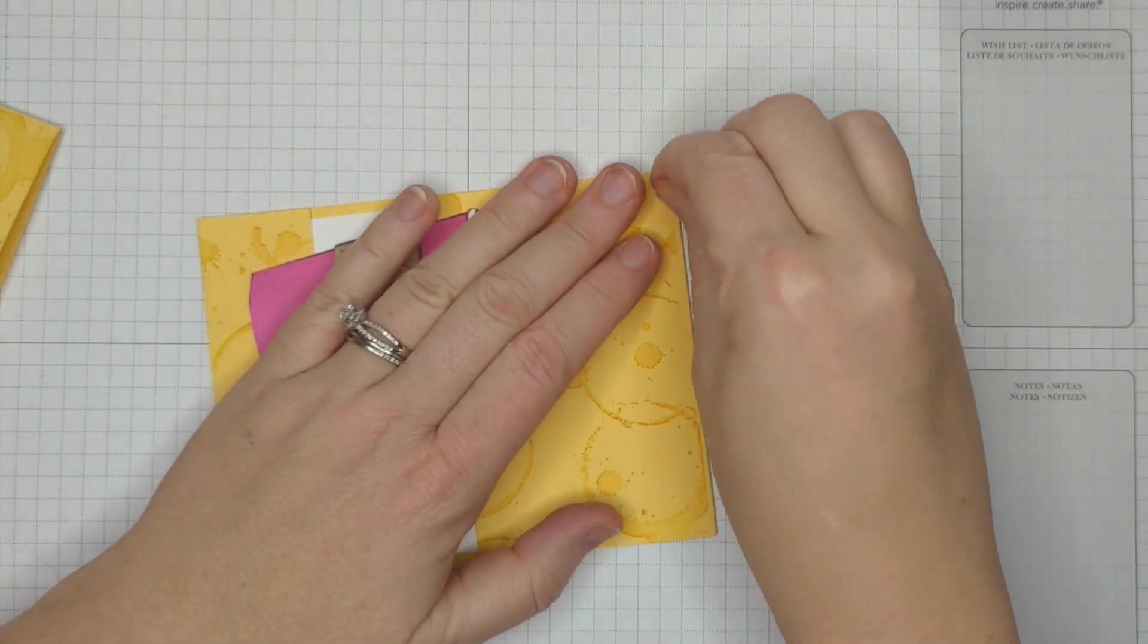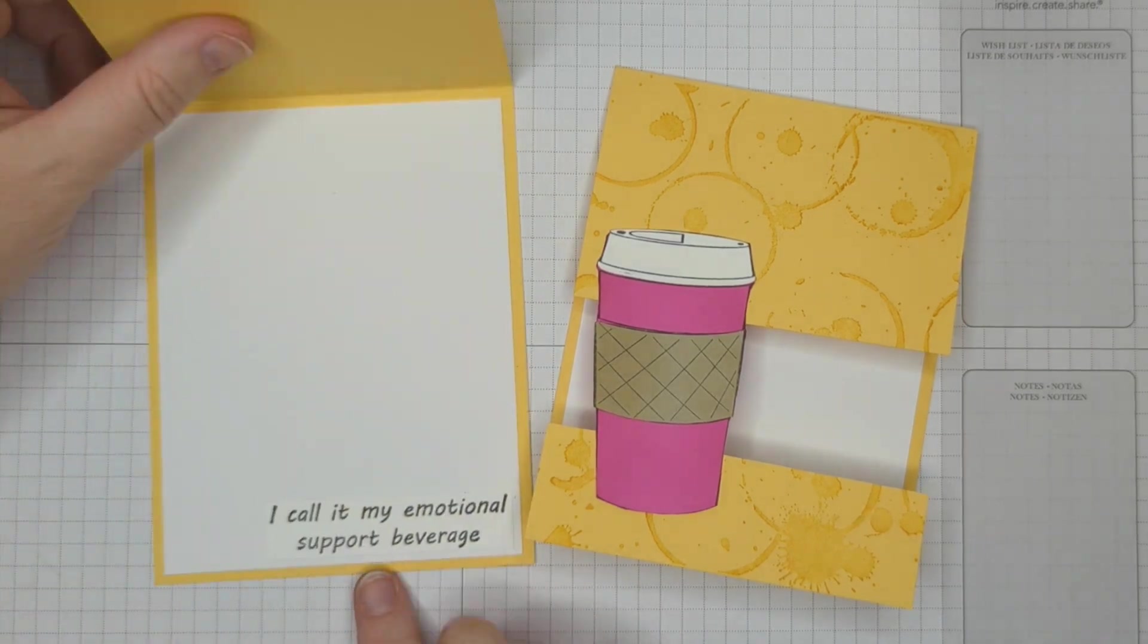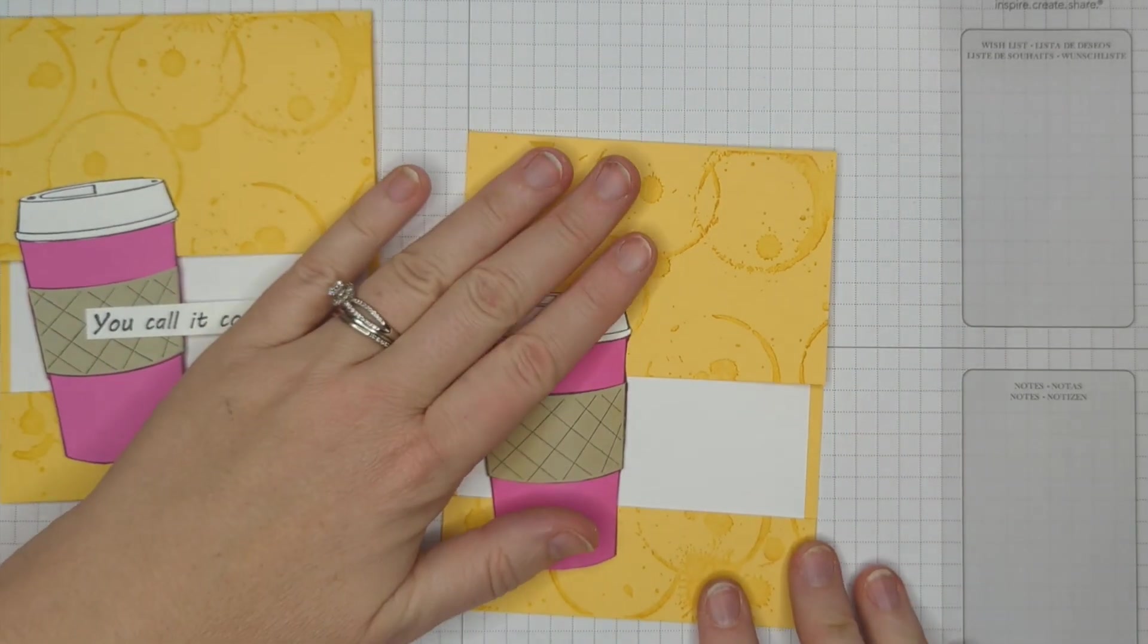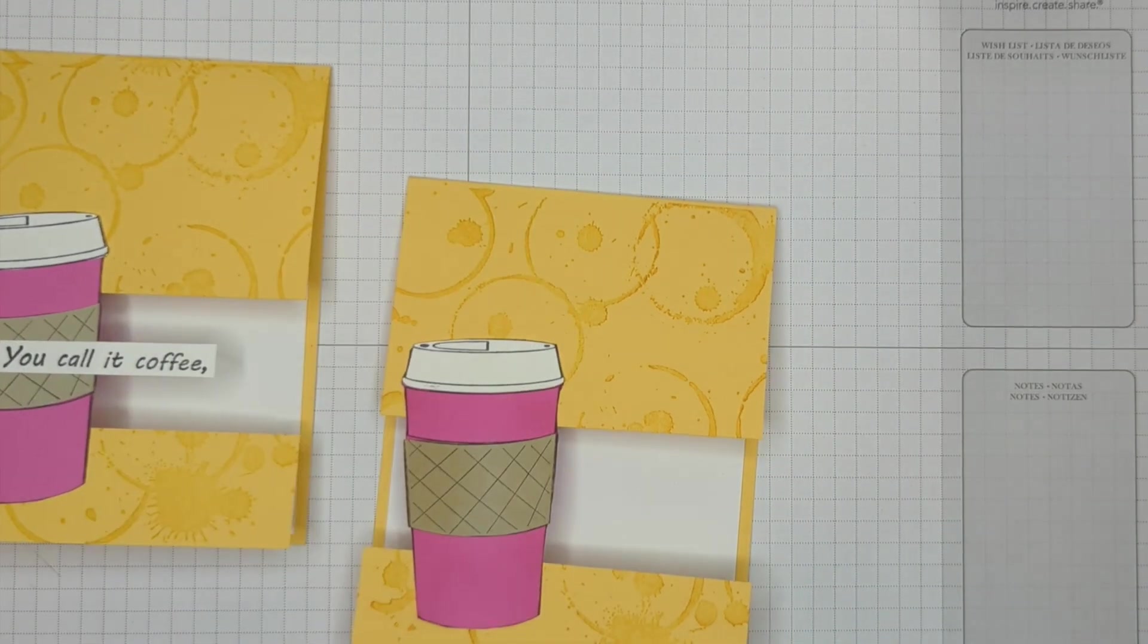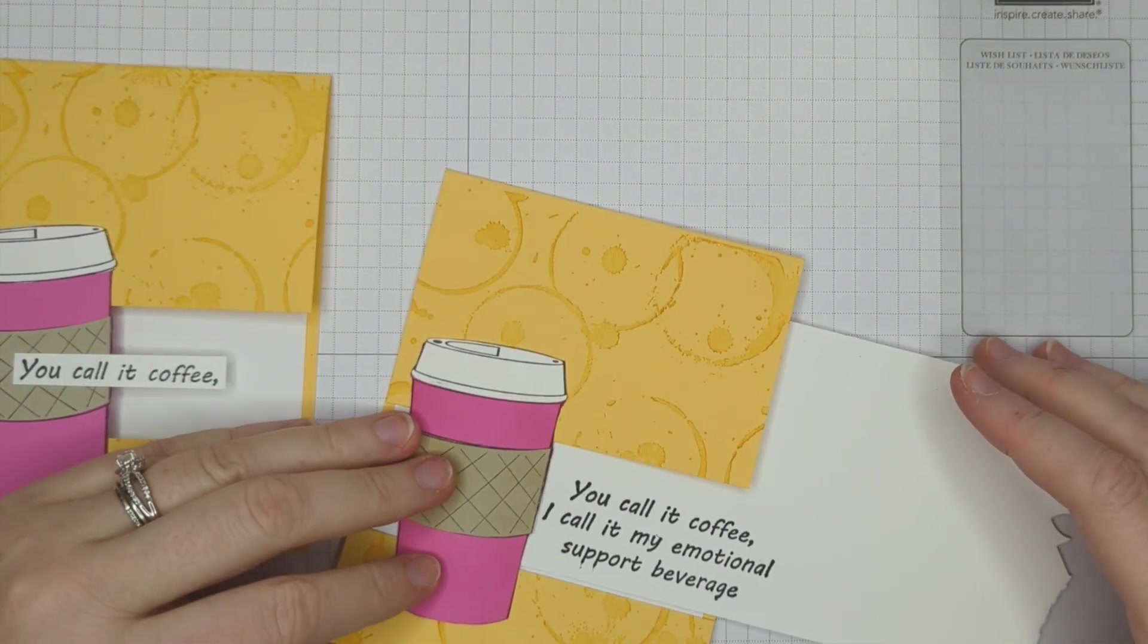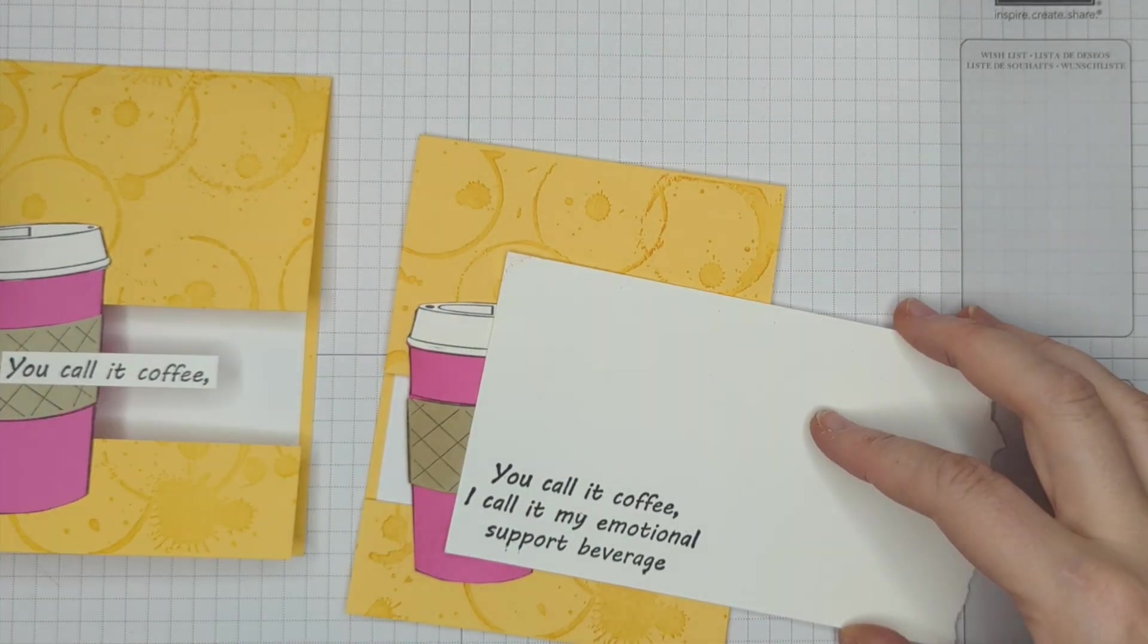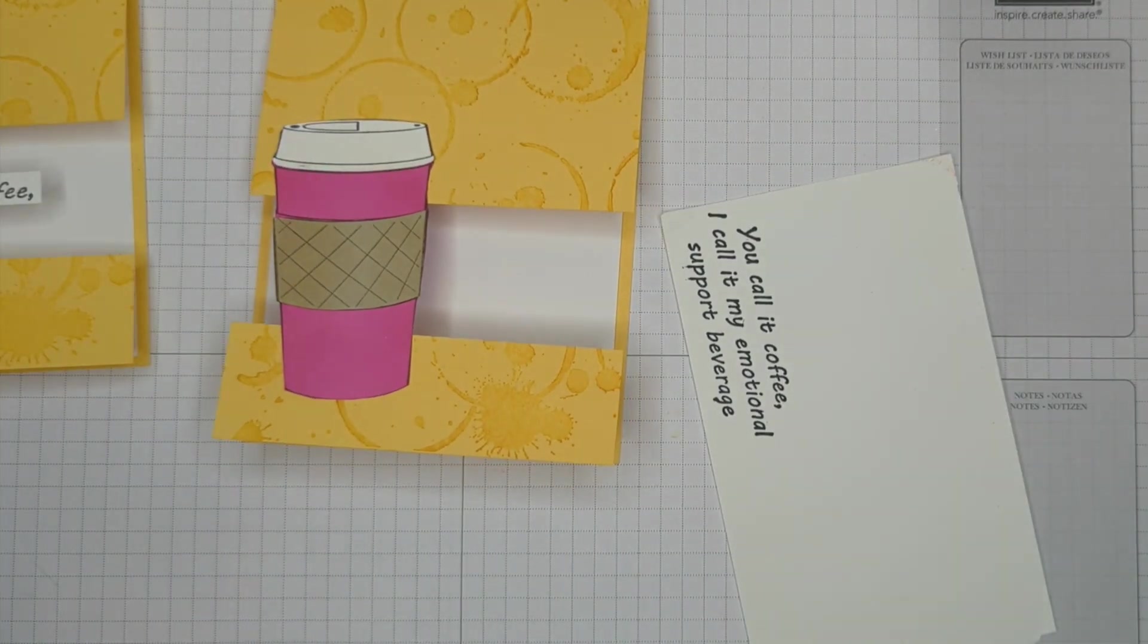So the sentiment that I wanted to use for this says you call it coffee, I call it my emotional support beverage. But unfortunately, I wasn't able to fit, and I don't think I'm going to be able to this time. This sentiment is just a little bit too big for this card. But I really liked it and I wanted it to go together. I just think this is the perfect sentiment. This makes me so happy.